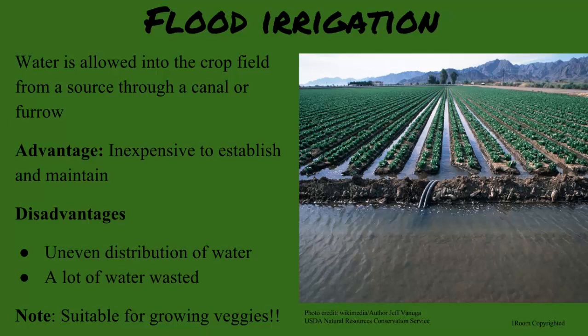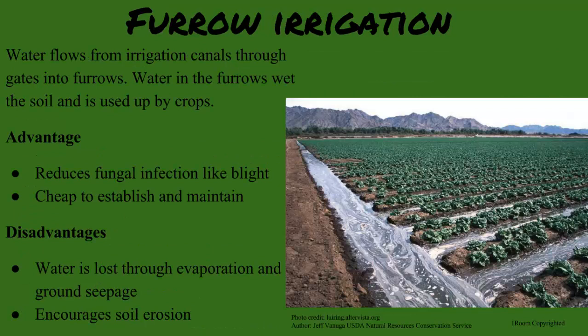Do you ever try furrow irrigation? I'm familiar with it, but we don't really practice it. Furrow uses the source water to flow through gates into furrows. The water wets the soil, and since the crops are planted next to the ridge, they are watered. The advantages are that it reduces the risk of fungal diseases and is relatively cheap to establish and maintain. The disadvantage is that a lot of water is lost through evaporation and ground seepage, and soil erosion is more likely to occur.